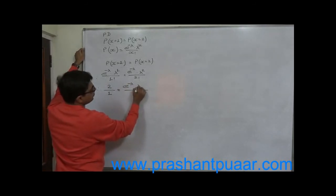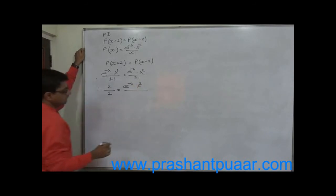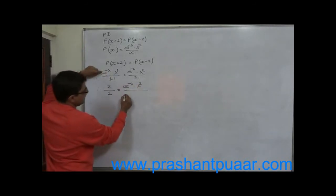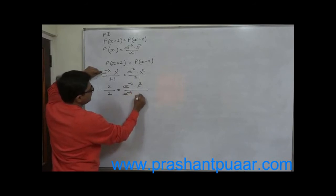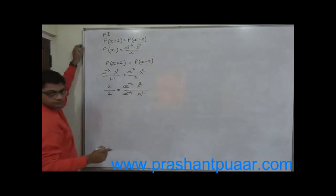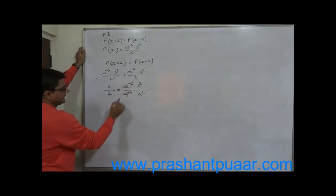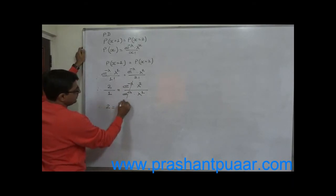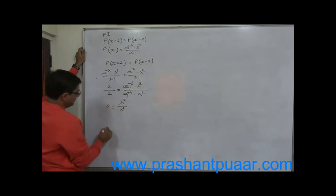e raise to minus mean into mean raise to 1. So this 2 can be cancelled. 2 equals to mean raise to 2 upon mean raise to 1. That means 2 equals to mean raise to 2 minus 1.